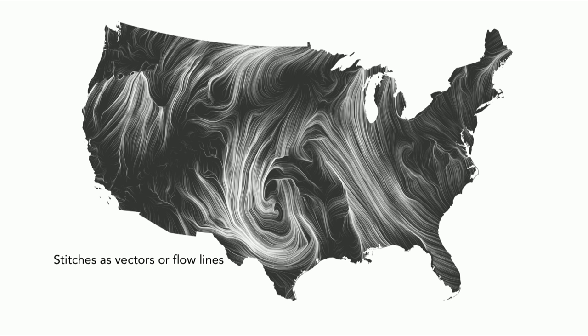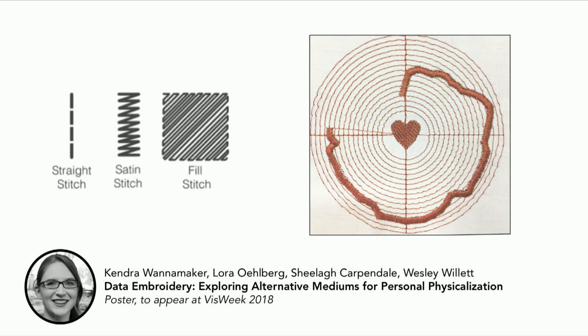I had an undergraduate student, Kendra, who now is working on her master's. For her undergraduate thesis, she was thinking about exactly this issue. Kendra went back to the embroidery machine and said there's really only one stitch, but depending on how you go about that stitch, there are a bunch of different ways to create new effects: the straight stitch, the satin stitch, and the fill stitch. Building off of Stitch Code — a Swiss research group's tool that uses an embroidery machine like Turtle to teach kids — she created an add-on to allow more types of renderings.